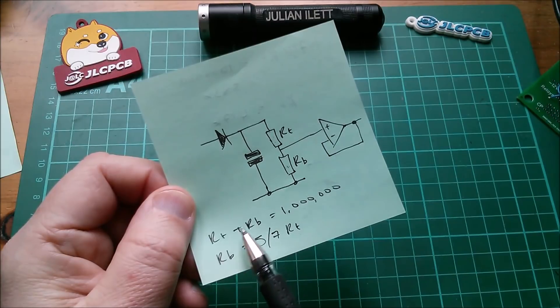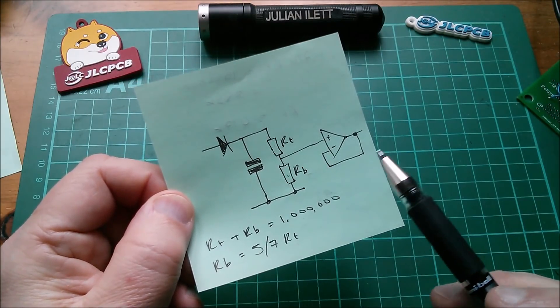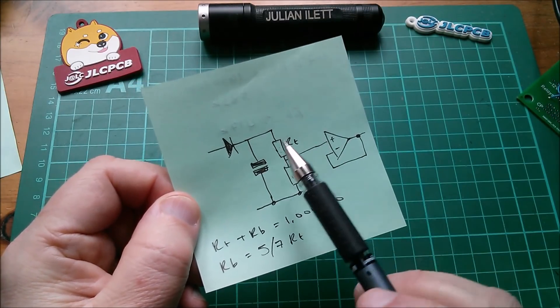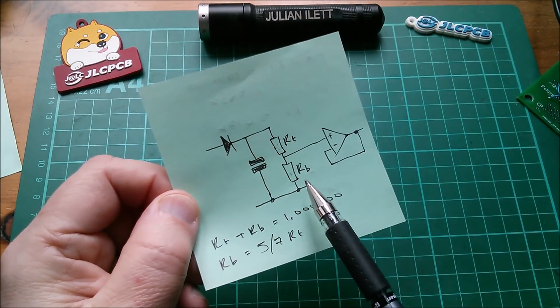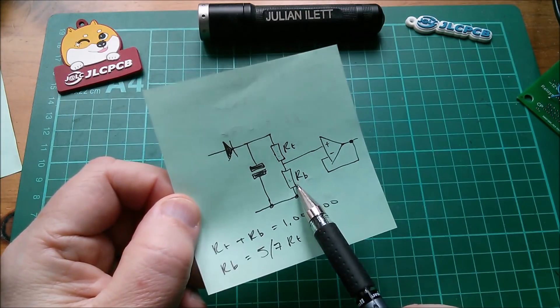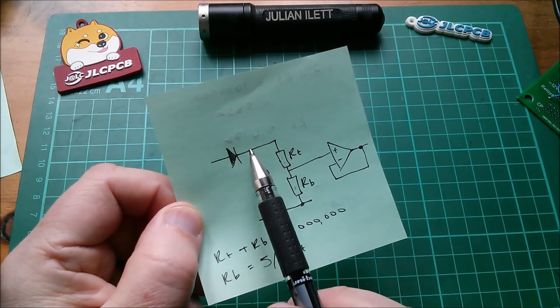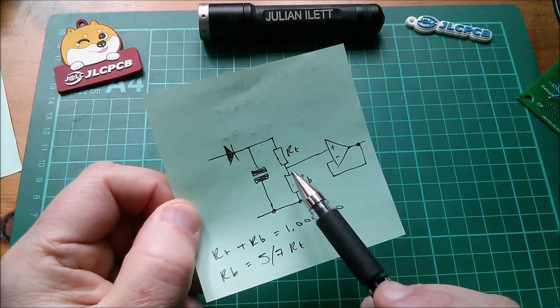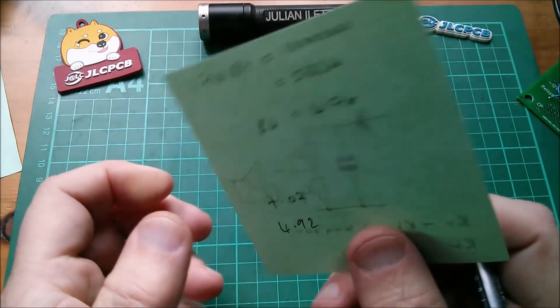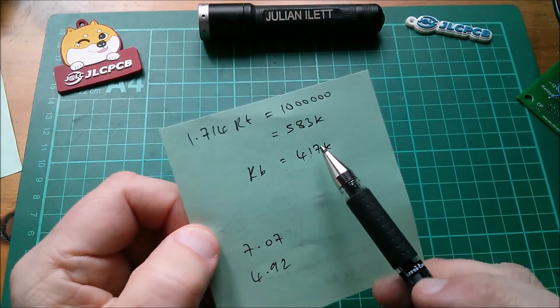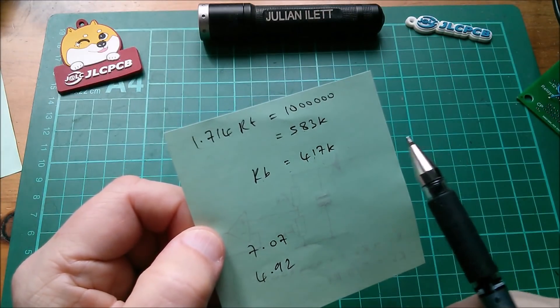So which is more important, the ratio of Rb and Rt, or the total value of Rb plus Rt? Well, this one megaohm, we could flex a bit on that, but I would like to keep this as five-sevenths because I'm trying to measure the voltage here, so I'd like that to be as accurate as possible.